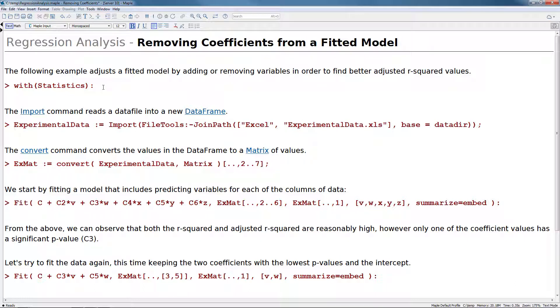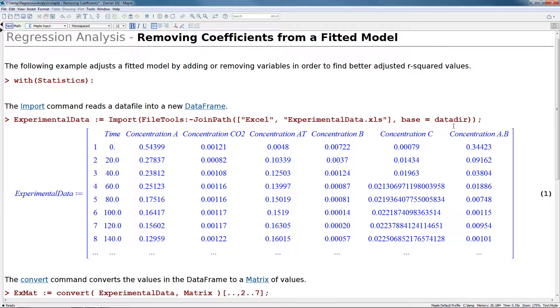For this example, we are going to actually import some data that's stored in a file on disk. The import command only has one argument. In this case, it's the location of the file on disk. So here we specify file tools join path of Excel experimental data with base equals data dir. This basically just tells Maple that we want to read in a file that's stored in Maple's data directory. This is the resulting data frame.